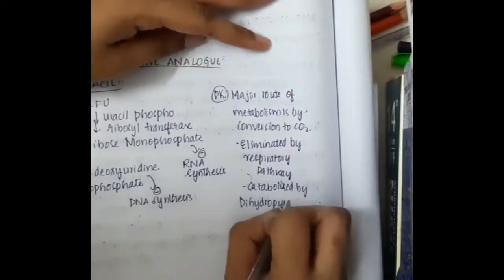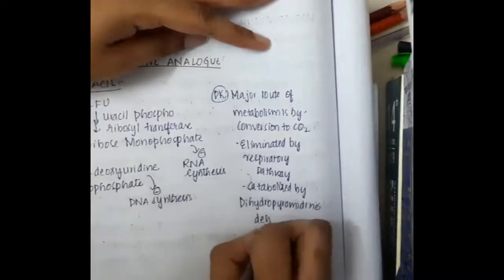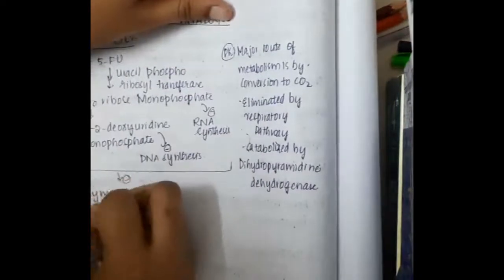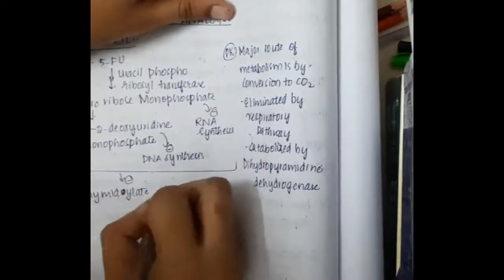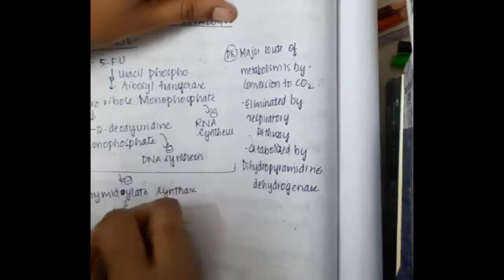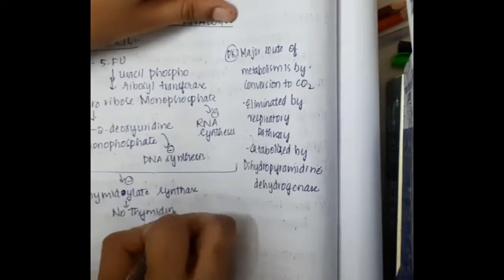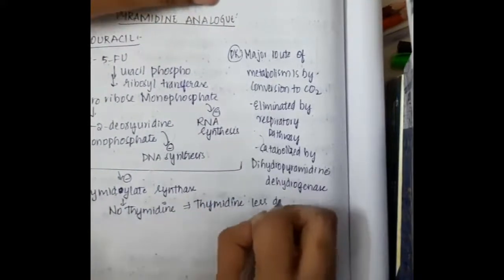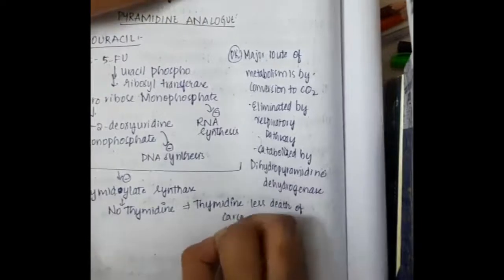5-fluorouracil also inhibits the enzyme thymidylate synthase, thus there is no thymidine. This causes thymidine-less death of carcinoma cells.